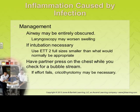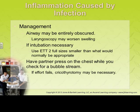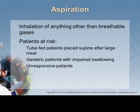If intubation becomes necessary in croup, you want the most experienced person doing it — they likely get one shot only. If they don't get it, the airway may swell and we're looking at extreme airway measures. Get an ET tube two sizes smaller — if they need a 6.5, get a 4.5 — because the airway is already swollen. If it doesn't work, they may need a cricothyrotomy.